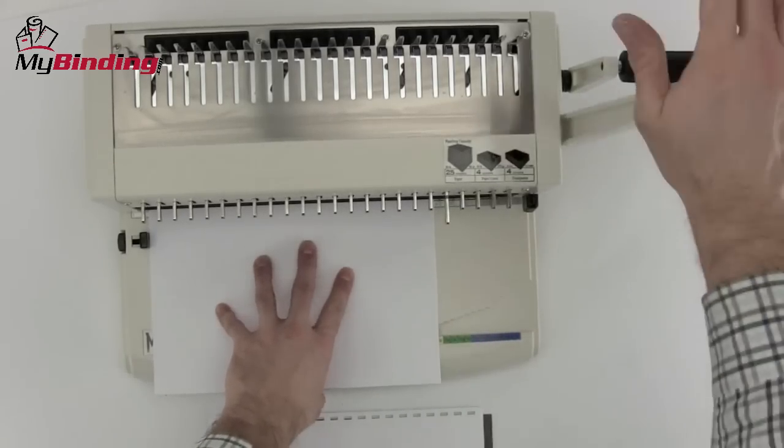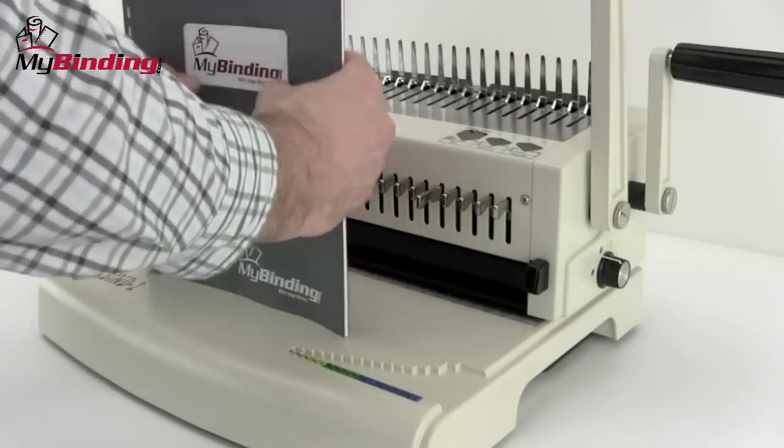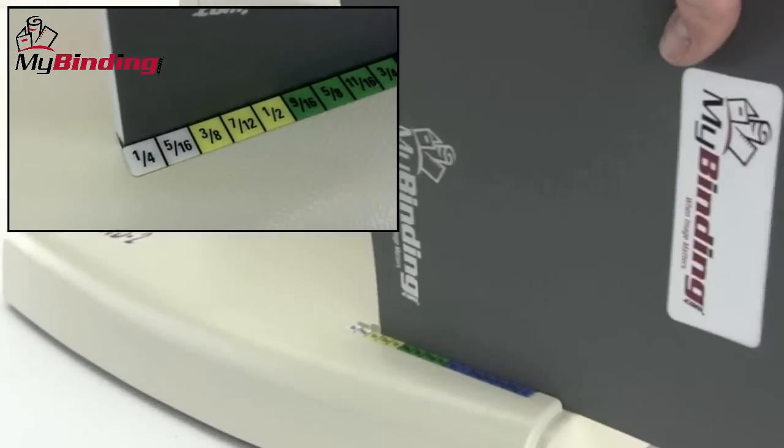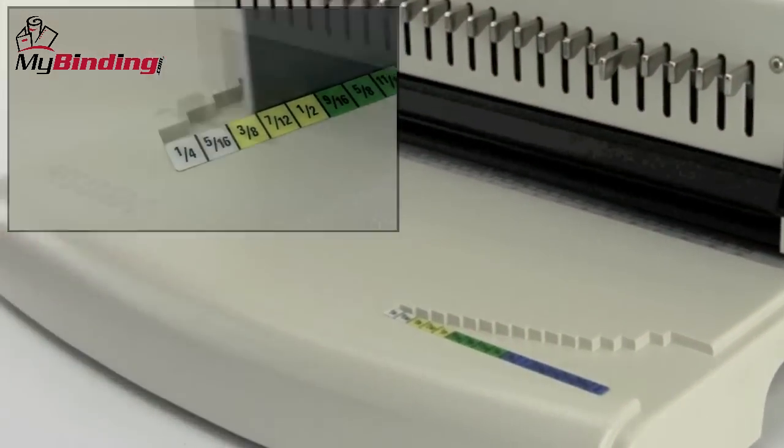With all your punches made, gather your sheets together. It's time to bind. To help you in comb selection, take your finished product and slide it into the grooves. Then you can read exactly what size comb or spiral O you need.